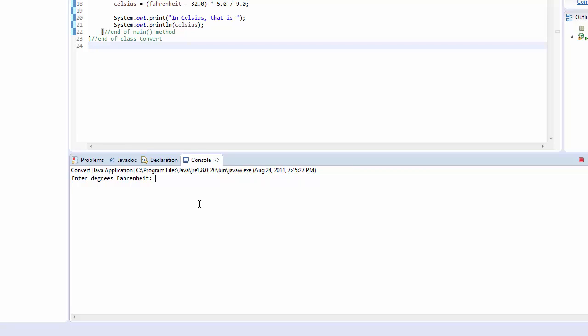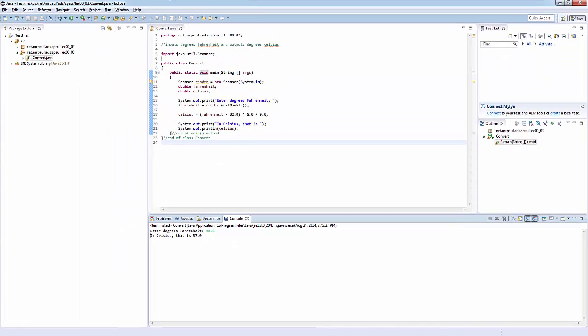Enter degrees Fahrenheit. All right, let's see. 98.6 degrees Fahrenheit. That is 37 degrees Celsius. Fantastic. It works. Makes sense. We're good to go.